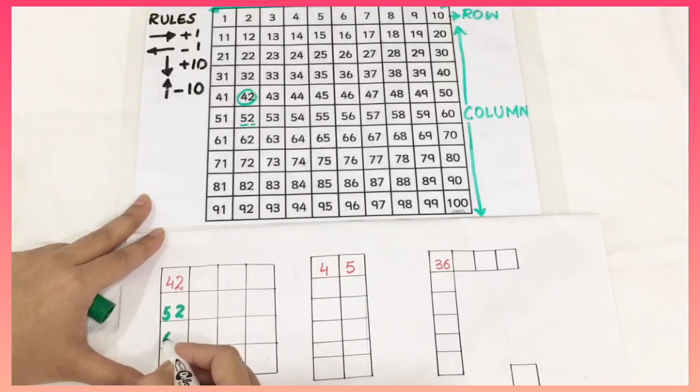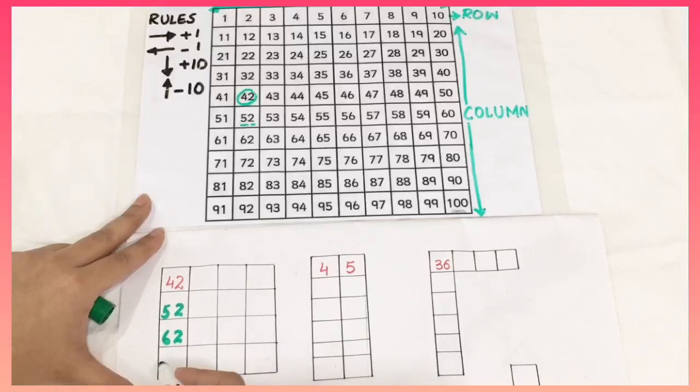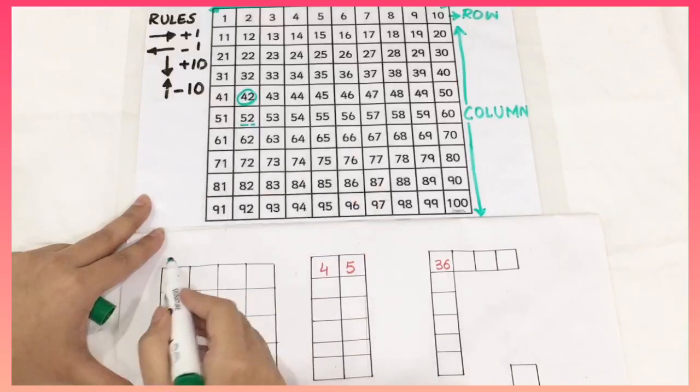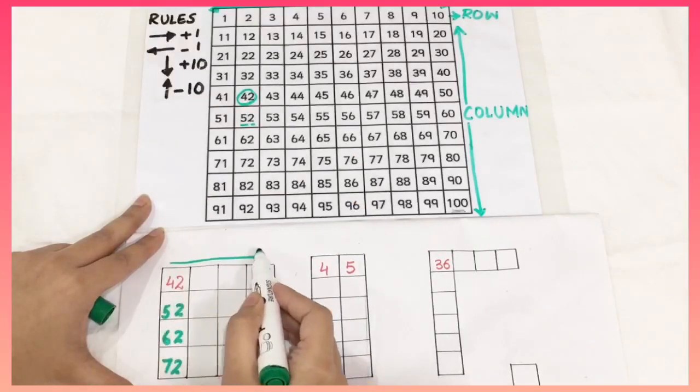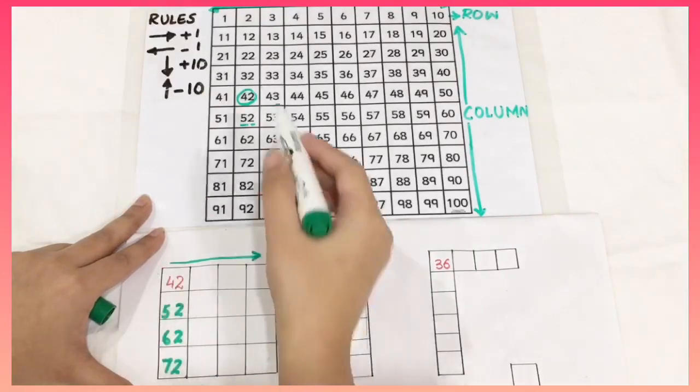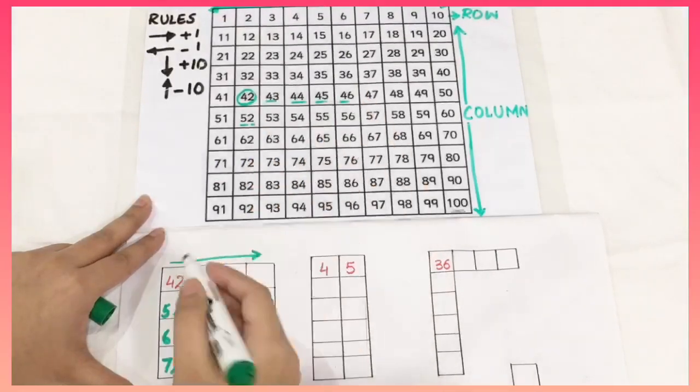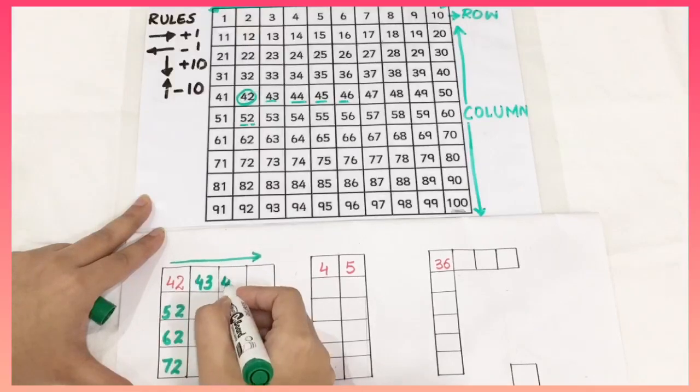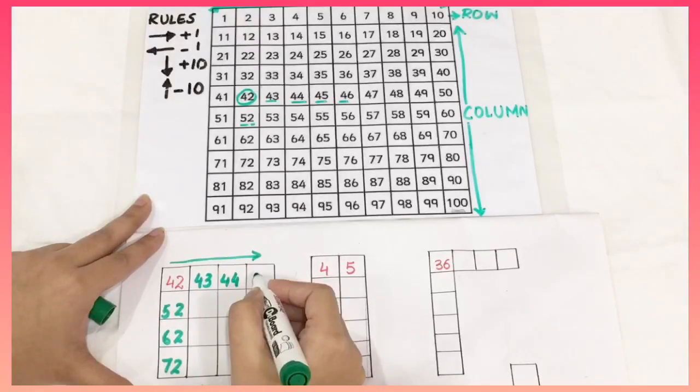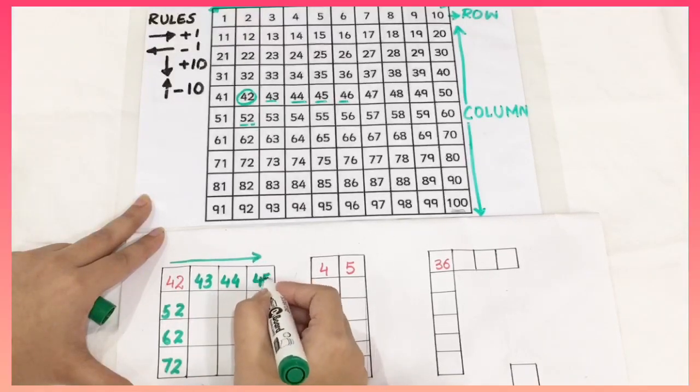Then it is 62, then 72. And now if I have to move in this direction, from left to right, I have to look for the numbers on this side. This is 43, 44 and 45.